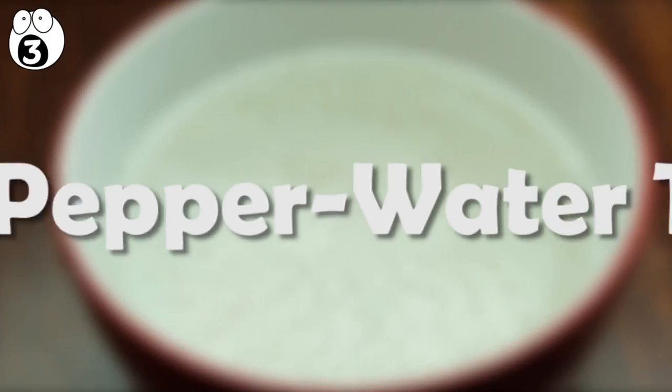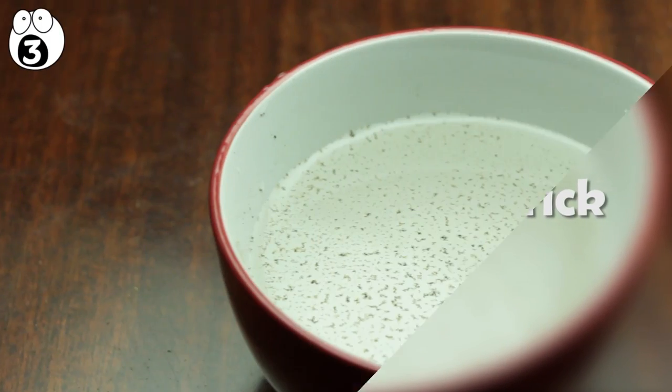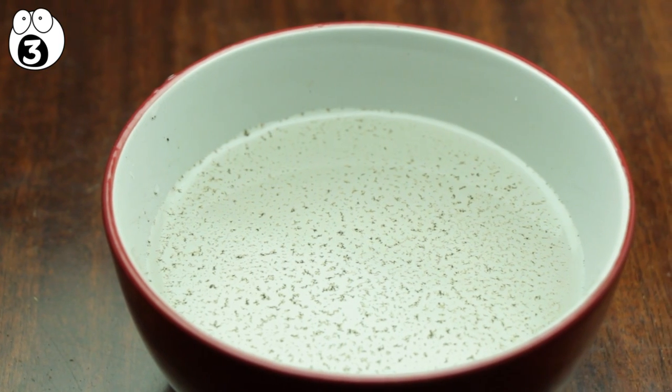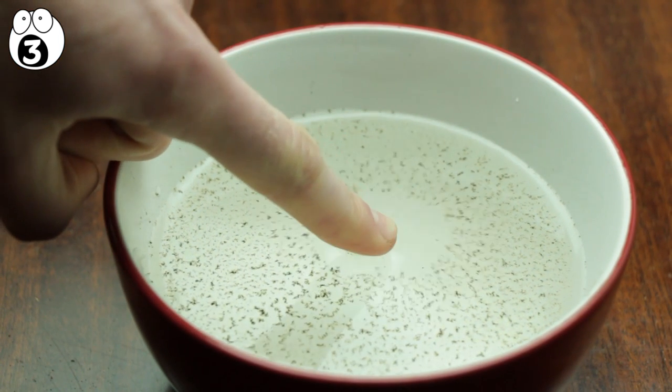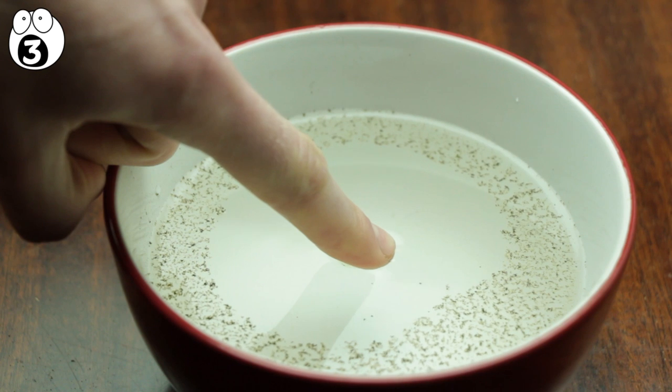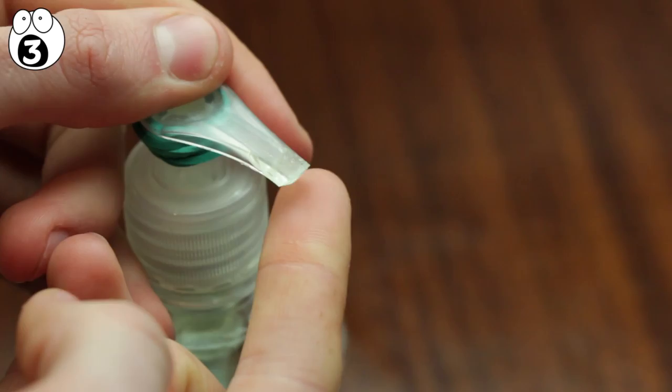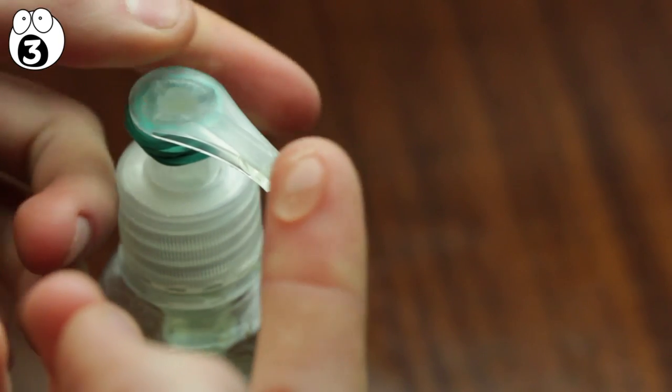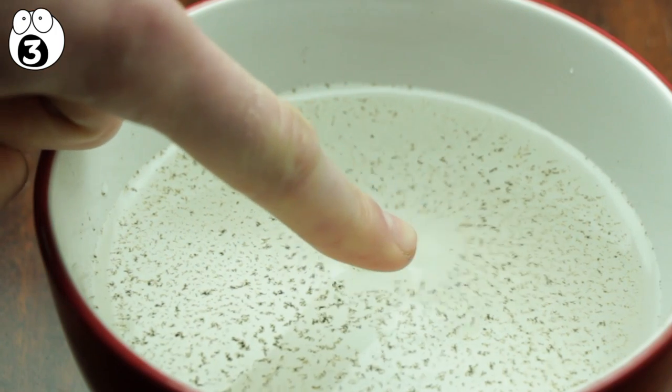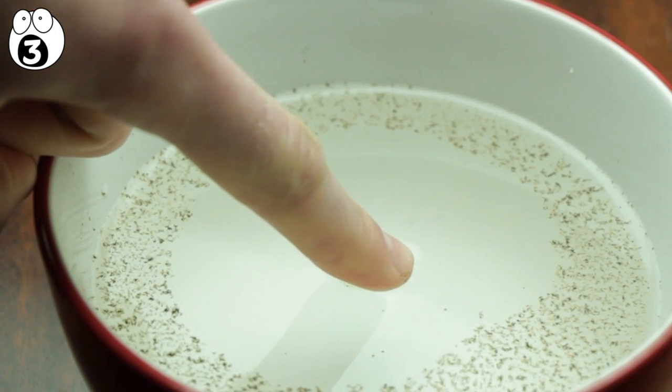Number 3, the pepper water trick. This is a bowl of water with pepper on the top. Watch as the water becomes afraid of a finger. This doesn't usually happen. It only happens because before the trick, you placed a tiny bit of soap on your fingertip. The soap's magical properties dissipate the pepper granules to the side. Amazing!